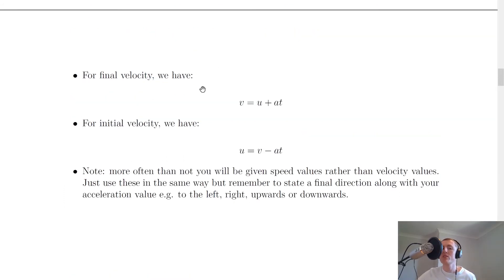So if you were rearranging for final velocity, you would start with a equals v minus u over t, and after a bit of manipulation, you would end up with this equation here, v equals u plus at.